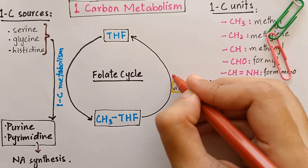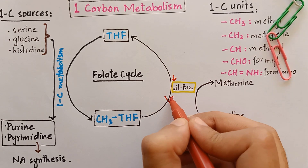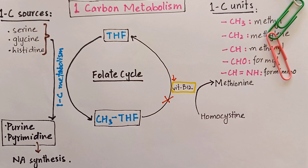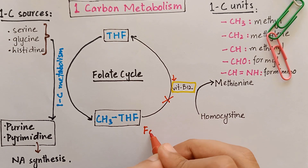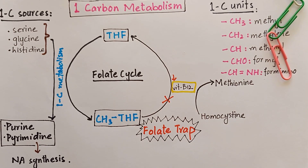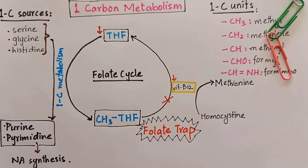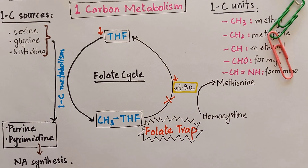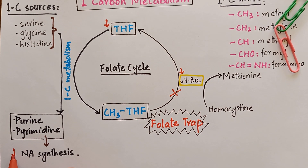In vitamin B12 deficiency, this major conversion step is blocked and almost the entire body folate is trapped as methyl-tetrahydrofolate. This is known as the folate trap. In this manner, B12 deficiency results in low levels of free tetrahydrofolate — the active form of folic acid — leading to reduced nucleic acid and DNA synthesis.